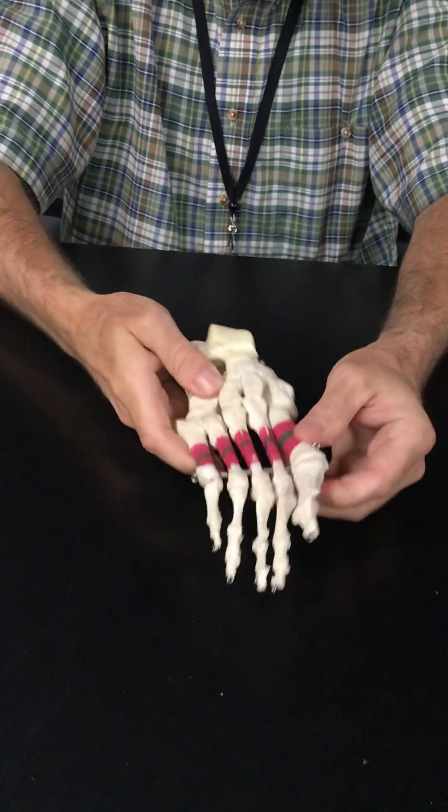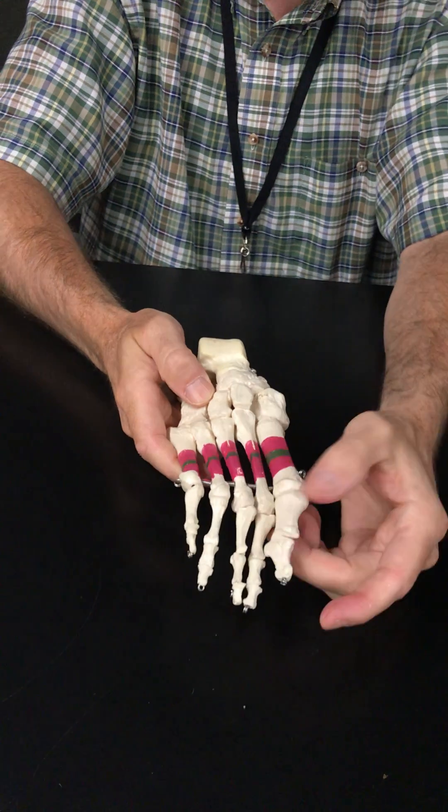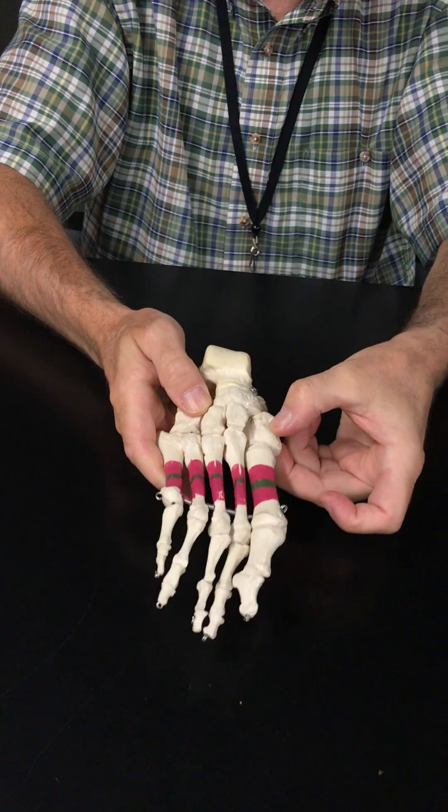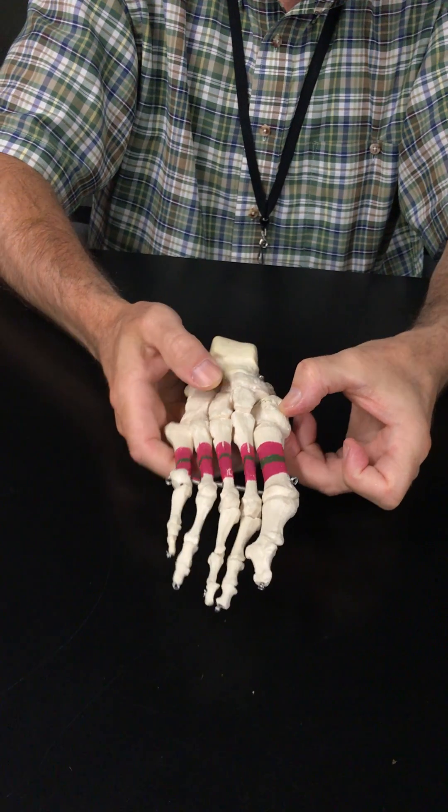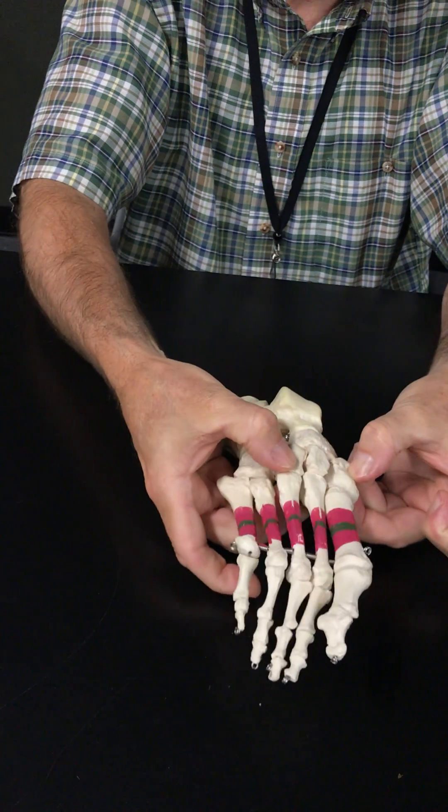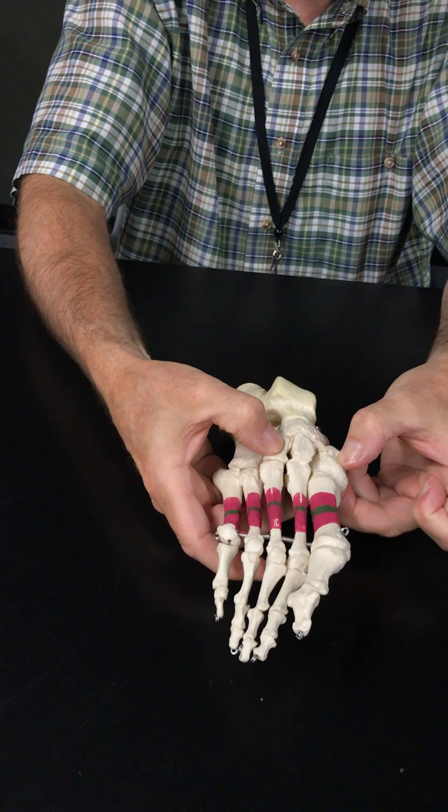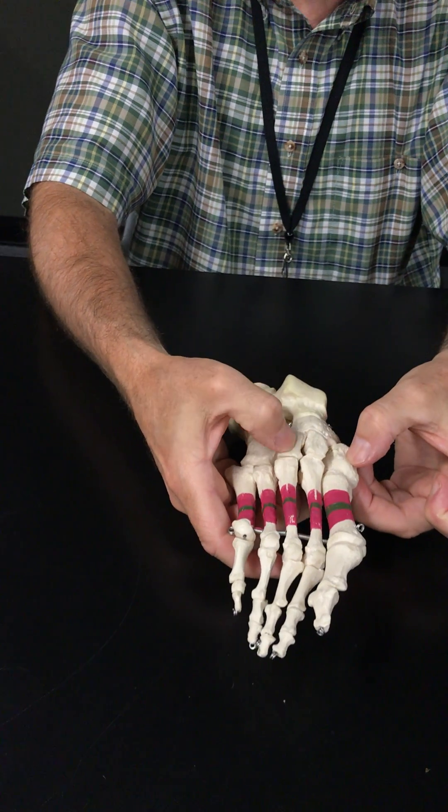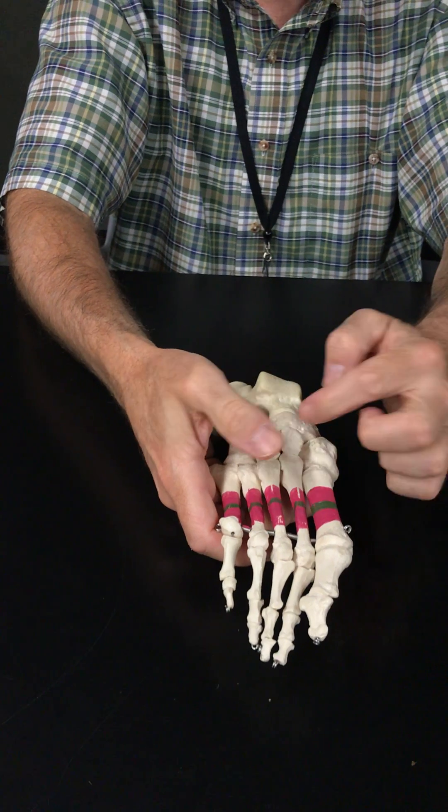Okay? Now your big toe is towards the midline of your body, so this is medial. So this is the lateral cuneiform for the third toe. And in between the medial and the lateral is the intermediate cuneiform.